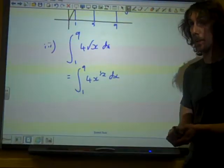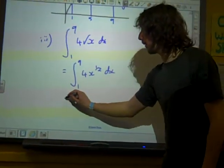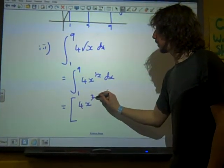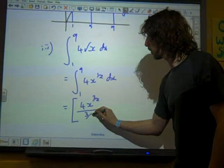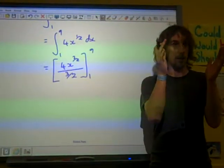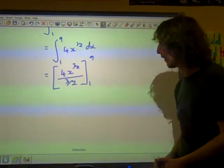Now we can integrate it, add one to the power, divide by the new power. Of course. Remember now, we're not going to put plus c in there, because we're doing it as a definite integral between limits.